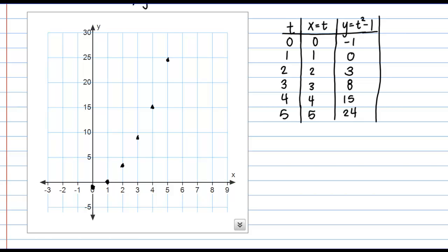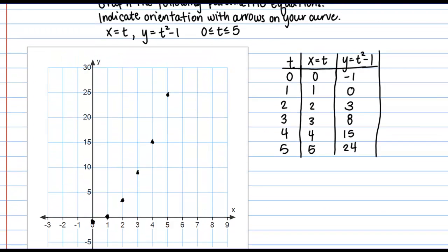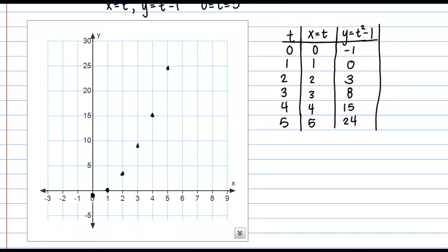Okay, now I've plotted six discrete points here, but this is a continuous curve, right? X equals t and y equals t squared minus 1. Those are both continuous and I'm looking at the interval between 0 and 5. So then I want to go ahead and connect these dots to actually form my curve here.